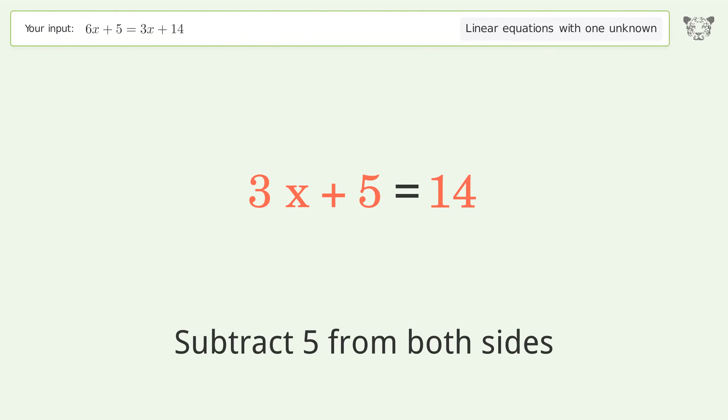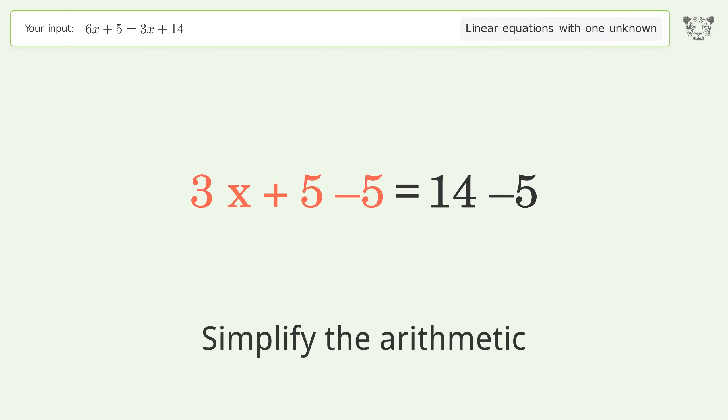Group all constants on the right side of the equation. Subtract 5 from both sides. Simplify the arithmetic.